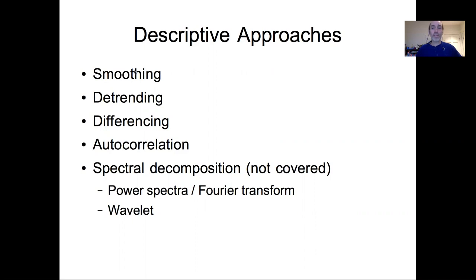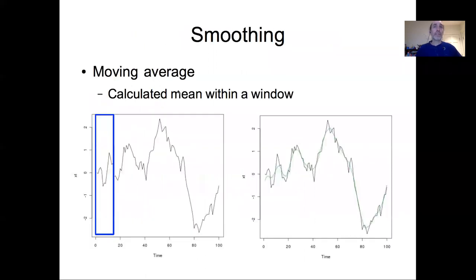Let's talk first about smoothing. The most simple version of smoothing is to calculate a moving average. The idea is that you look at some window of width defined by the user and calculate the mean within that window. Then that window moves across the time series, and as you move across you calculate the mean. This green line over here is that running mean through the data.